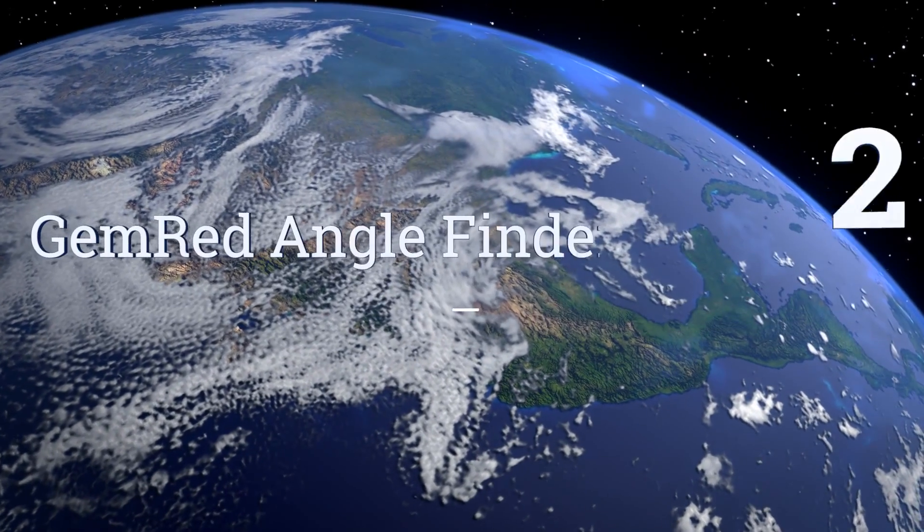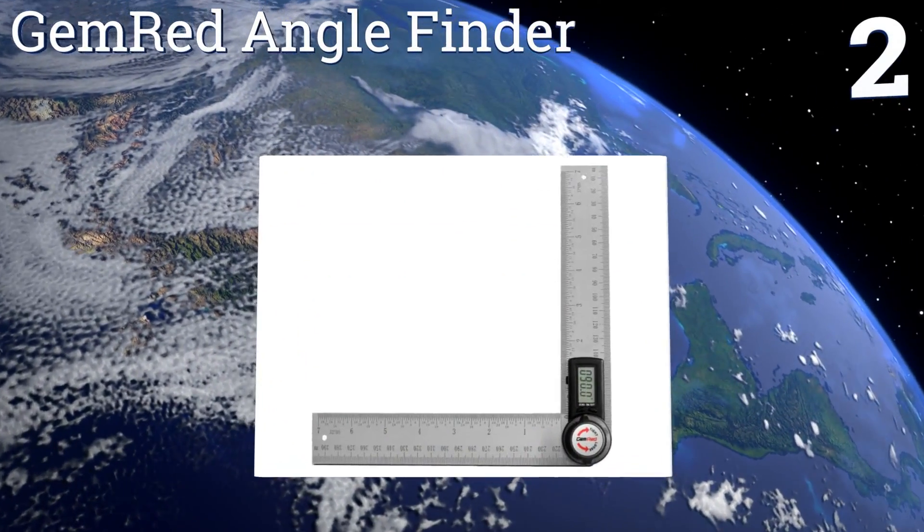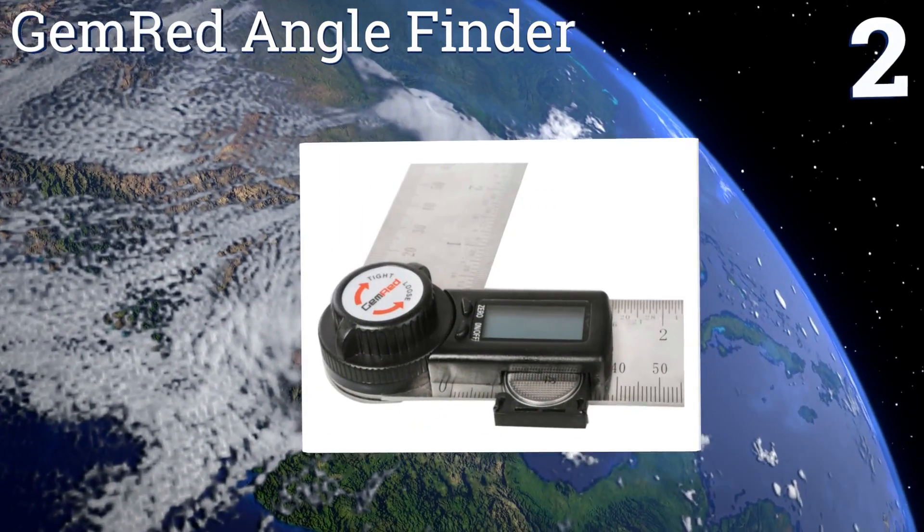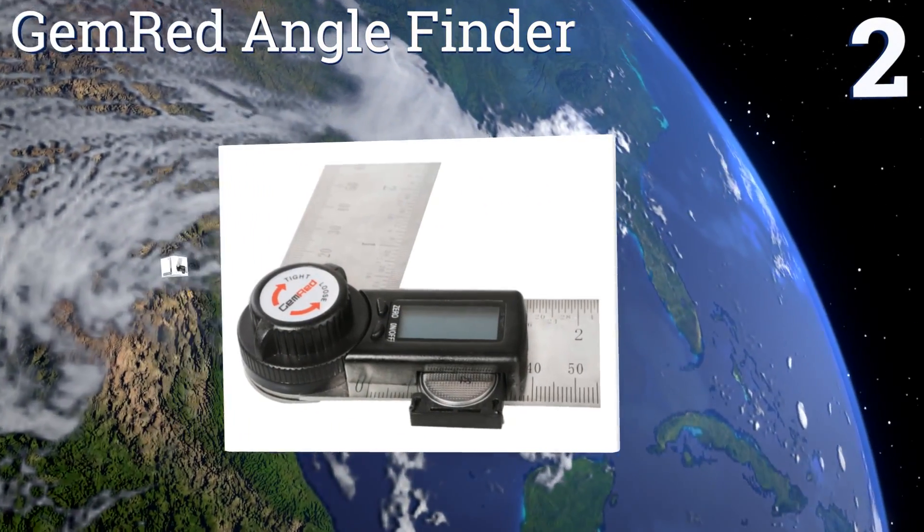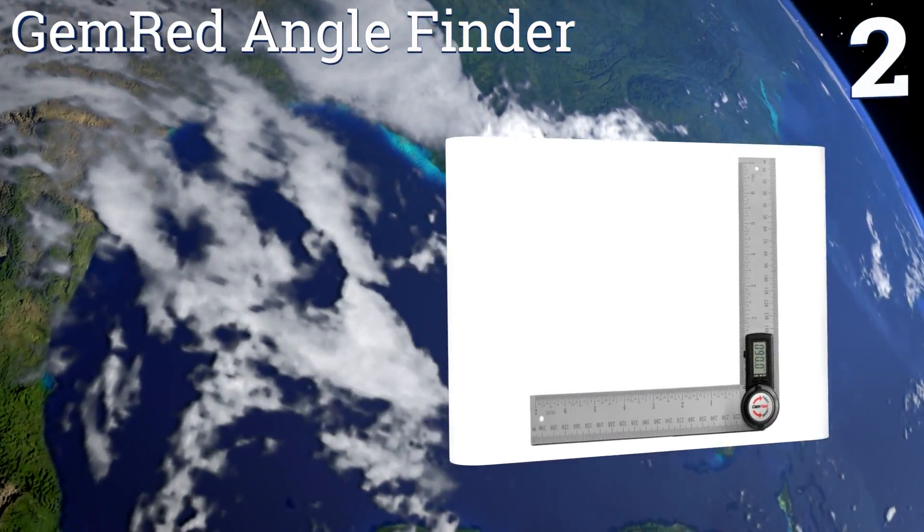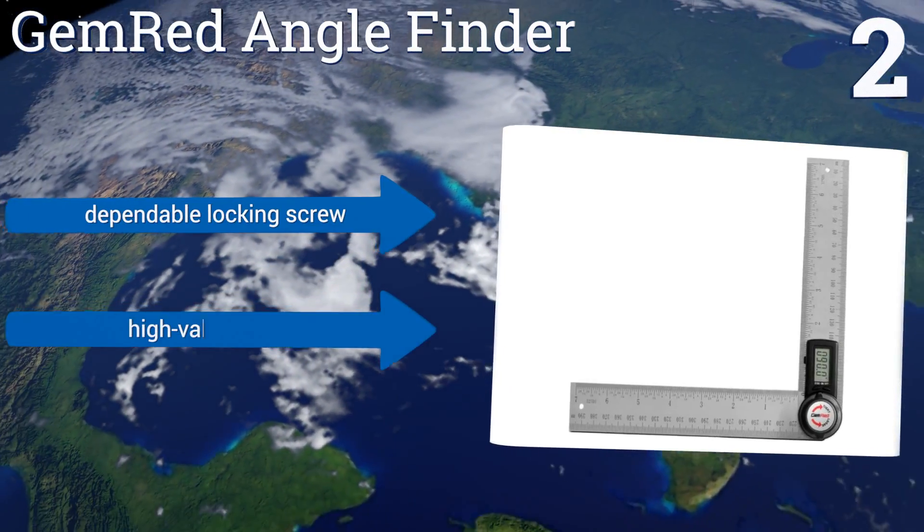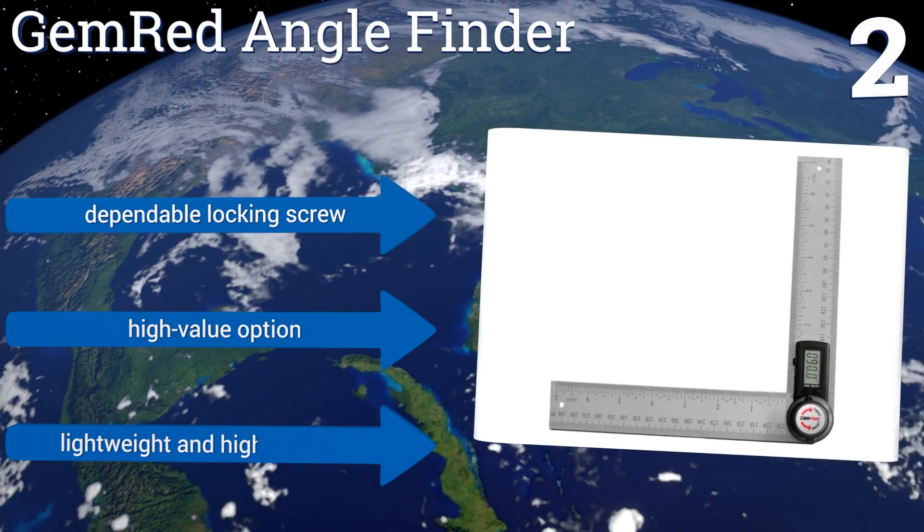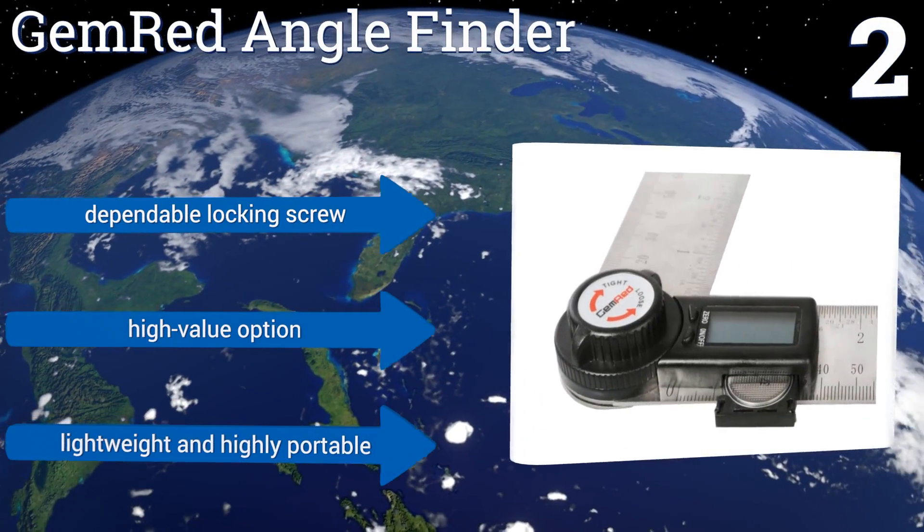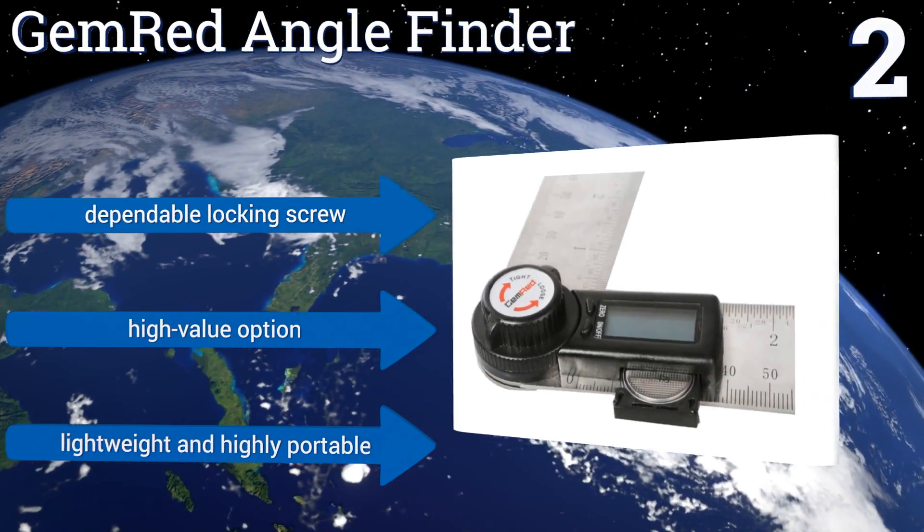At number two, available in a wide variety of styles and lengths, the GemRed Angle Finder generates a fast, clear, and accurate digital readout at virtually any angle. With only two buttons, it's very simple to use in obtaining measurements in metric and imperial units. It comes with a dependable locking screw and is a high-value option. It's lightweight and highly portable.